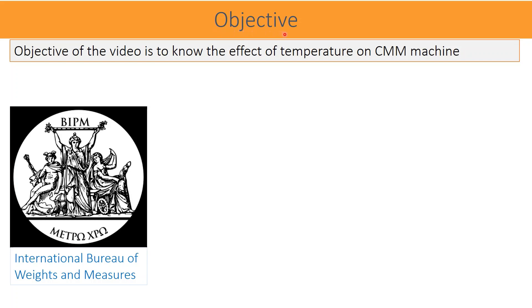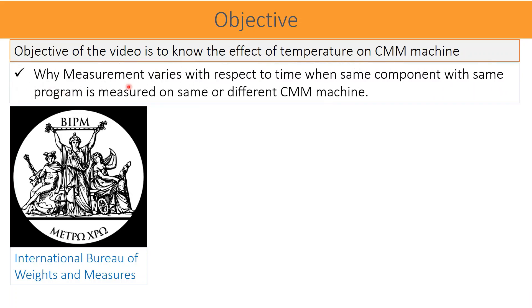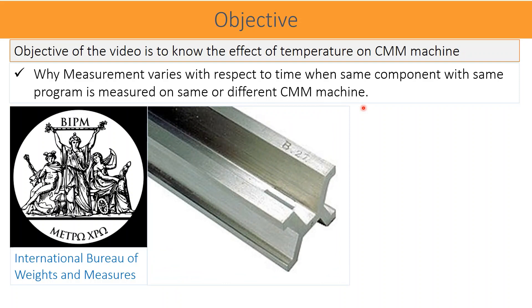The objective of this video is to know the effect of temperature on CMM machines — why measurements vary with respect to time when the same component with the same program is measured on the same or different CMM machine. When we say measurements or dimensions are varied, it means lengths and angles of the features are varied.